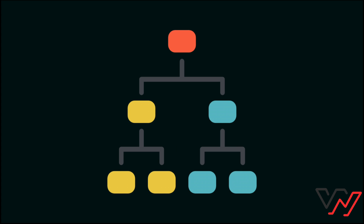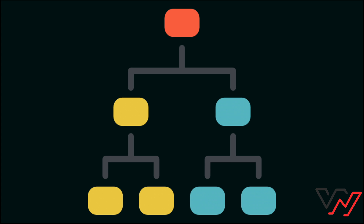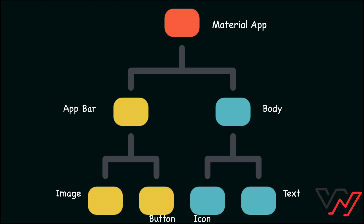At the root of this tree is the MaterialApp widget, which represents your entire application. From there, widgets branch out into smaller, more specialized widgets, forming a tree-like structure. Each widget in the tree has properties that define its appearance, layout, and behavior. These properties can be static or dynamic, allowing for highly customizable and responsive UIs.